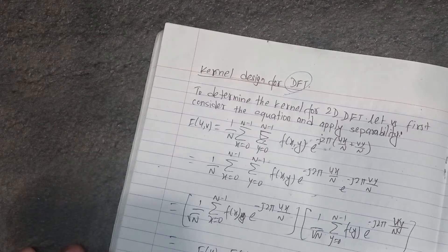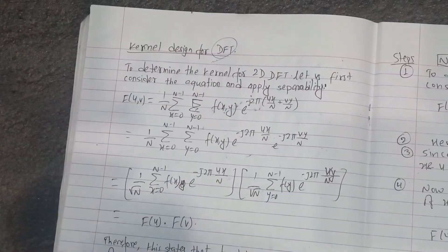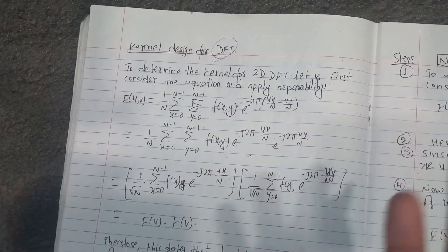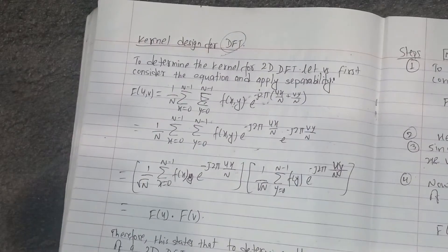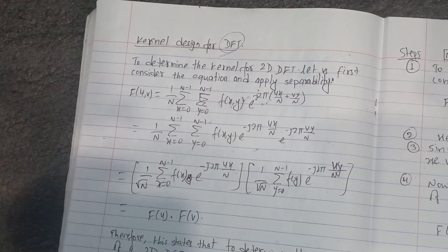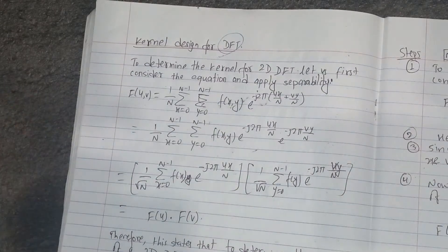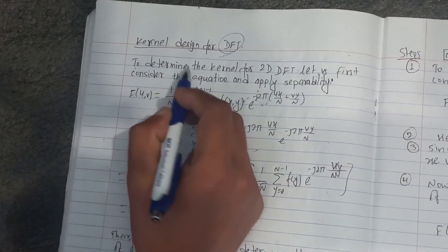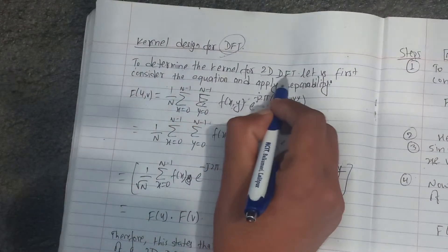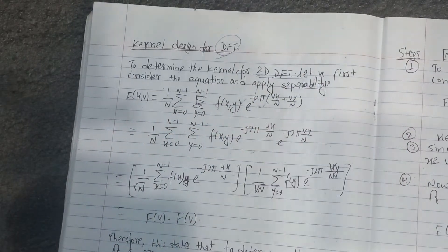If you look at the exam point, you can see the video in the same way. To determine the kernel for the 2D discrete Fourier transform, let's first consider the equation and apply separability. Separability is 1, 1, 1, 1.